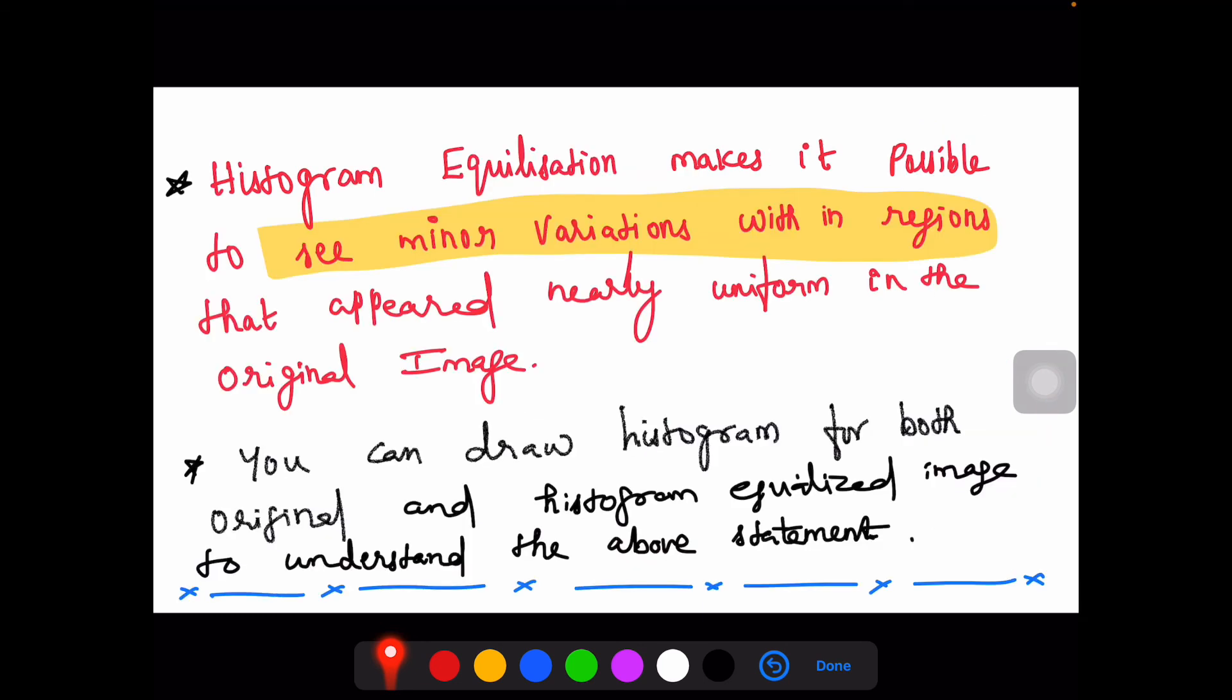Now ultimately, we can conclude that histogram equalization makes it very much possible to see the minor variations within the regions. You can see the minor variations in regions that appeared nearly uniform in the original image. Now we are making it to see very sharp changes and minor variations too. You can even draw the histogram for the original and histogram equalized images to understand this statement very well.